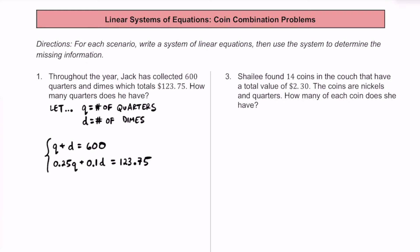This is the linear system we can solve to find the number of quarters that Jack has. You can solve this system a few different ways — some people might like substitution. I'm going to use elimination here. In particular, I'll take the second equation and multiply it by 100 to clear the decimals.